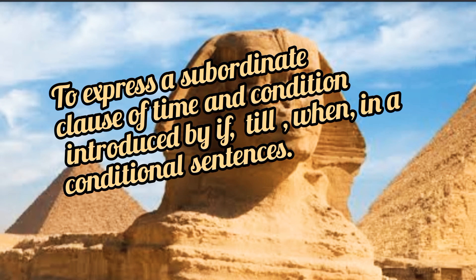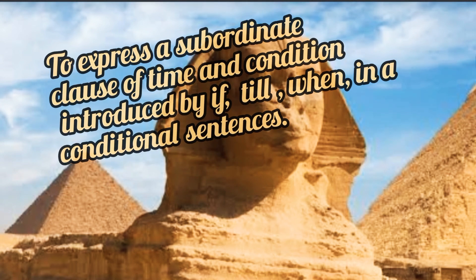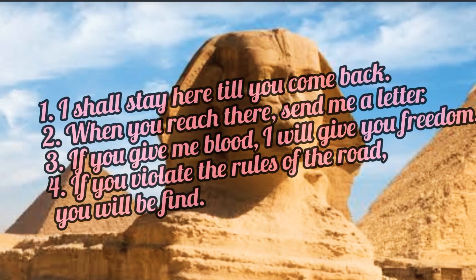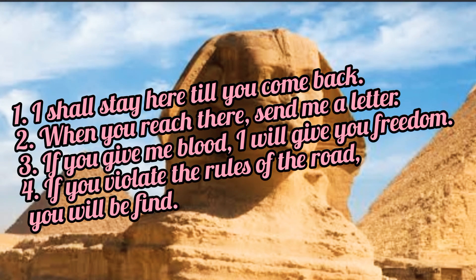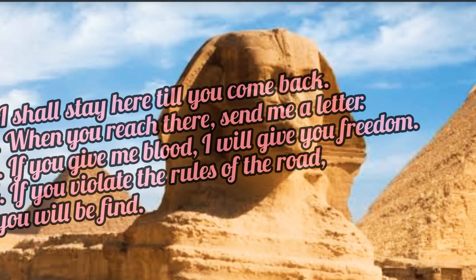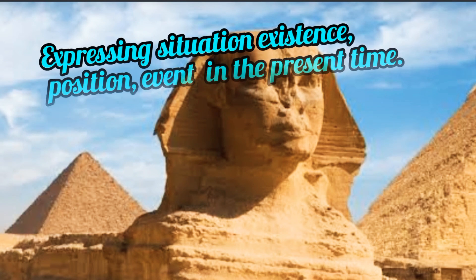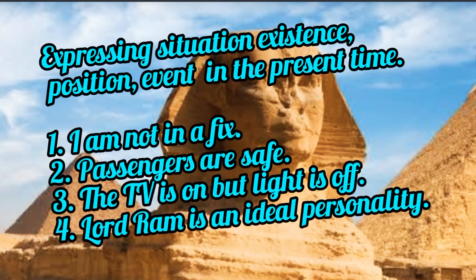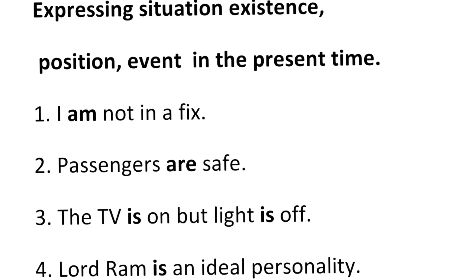In conditional sentences, when a clause starts with if, till, or when — like: 'I shall stay here till you come back.' 'When you reach there, send me a letter.' 'If you give me blood, I will give you freedom.' 'If you violate the rules of the road, you will be fined.' Here again, we can express situation, existence, and position in the present. For example: 'I am not in a fix.' — here 'am' is a verb. 'The passengers are safe.' 'The TV is on, but the light is off.' 'Lord Rama is an ideal personality.' These are some examples.